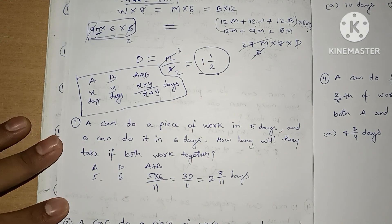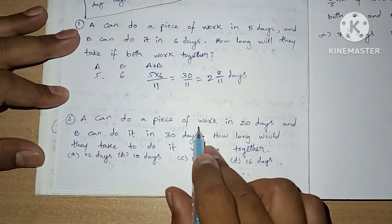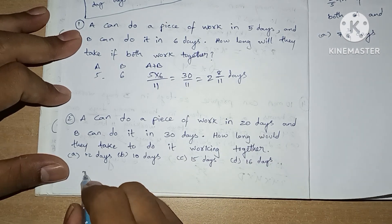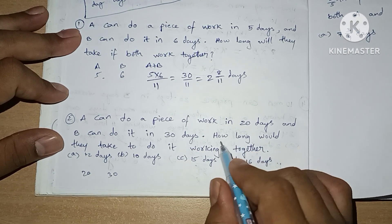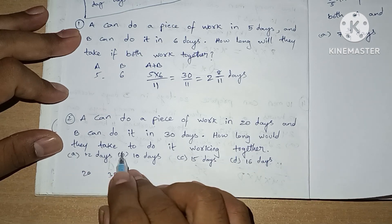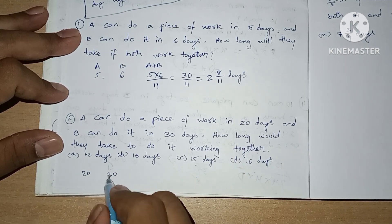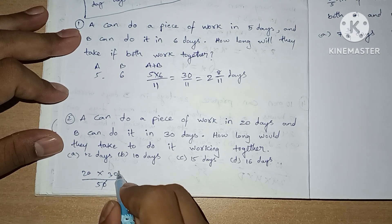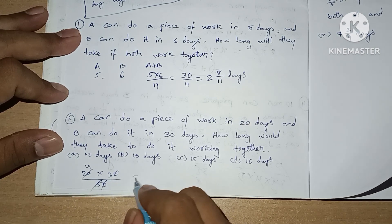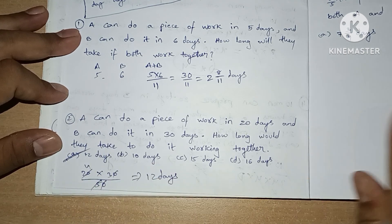Now we are going to see one more question. A can do a piece of work in 20 days and B can do it in 30 days. How long will they take working together? Using A × B / (A + B): simplifying we get 12 days. Both together take 12 days.